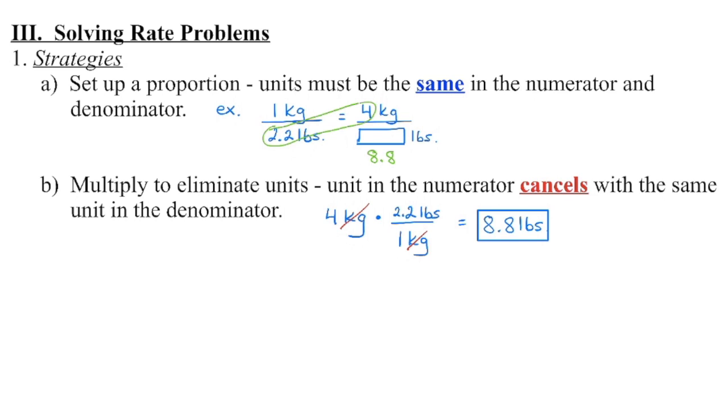So in this case, we're looking to see how many pounds is four kilograms. Four kilograms is 8.8 pounds. You don't have to set up a proportion. If you know that you can just multiply the kilograms by 2.2, you can do that.